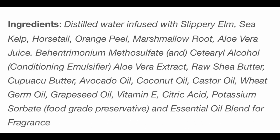The ingredients start with distilled water infused with slippery elm, sea kelp, horsetail, orange peel, marshmallow root, and aloe vera juice. That's all infused in the water — your water phase — along with a ton of humectants. Your slippery elm is a humectant that produces a mucilage. Your sea kelp produces a mucilage. Your marshmallow root — all of those plant gels are great humectants, which means they attract water to your hair. All natural products — amazing.